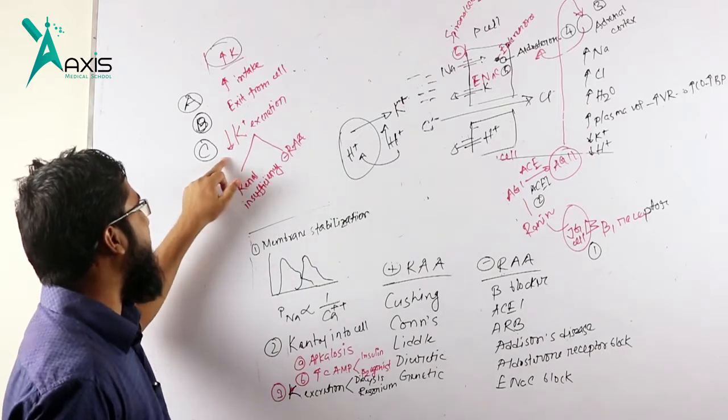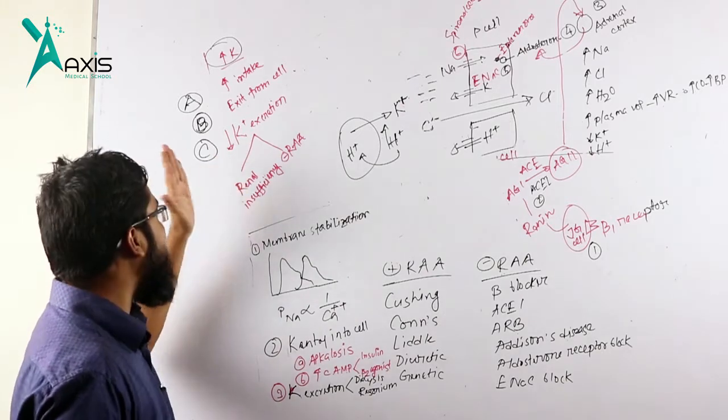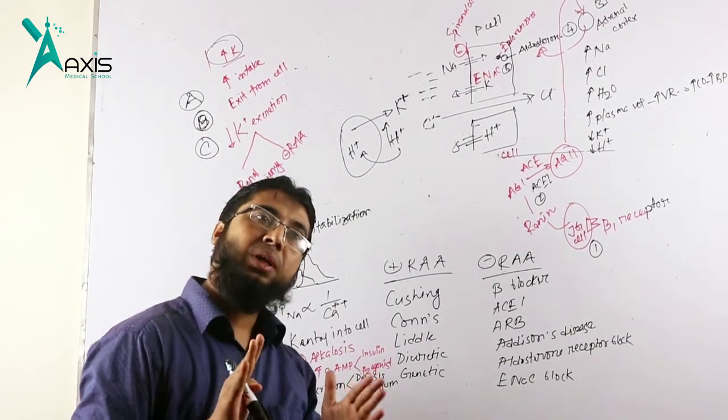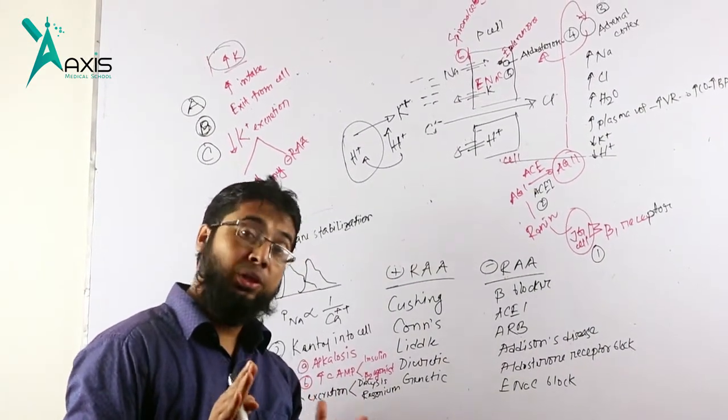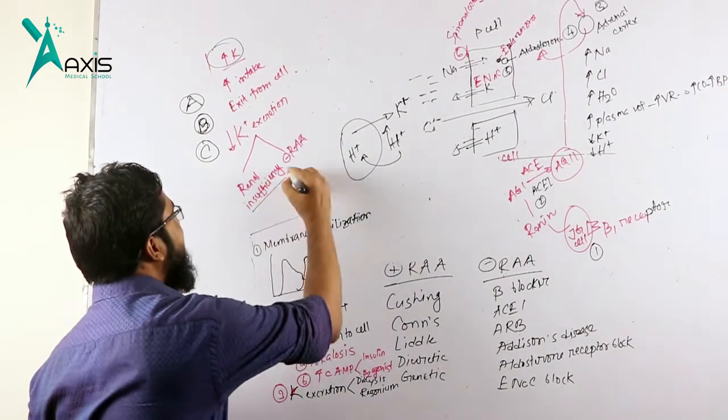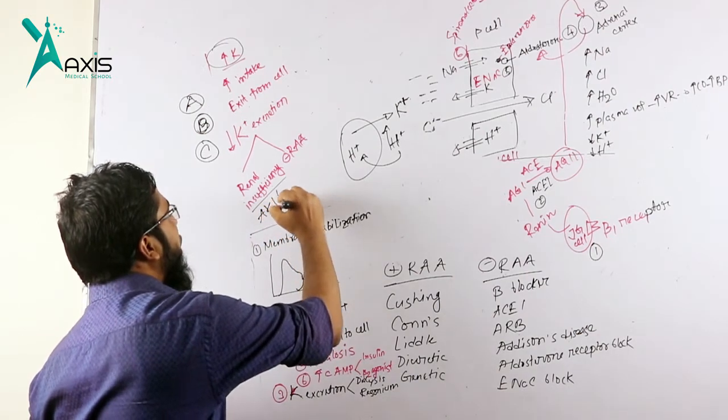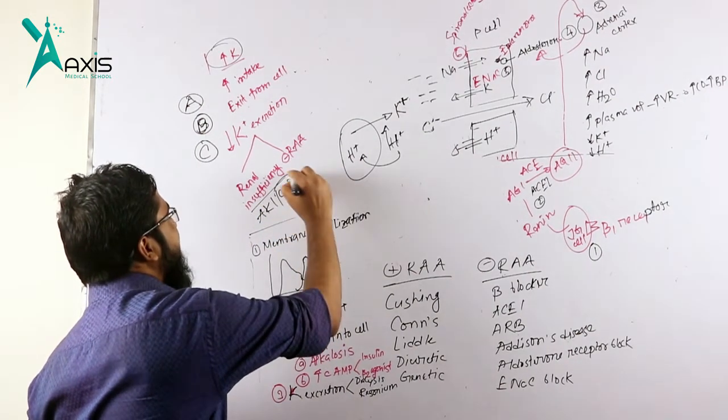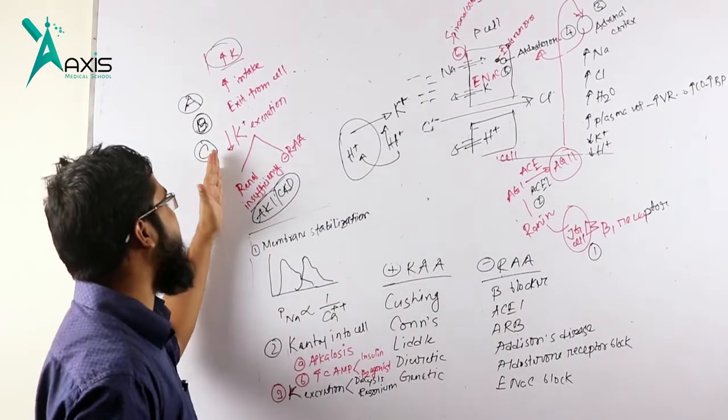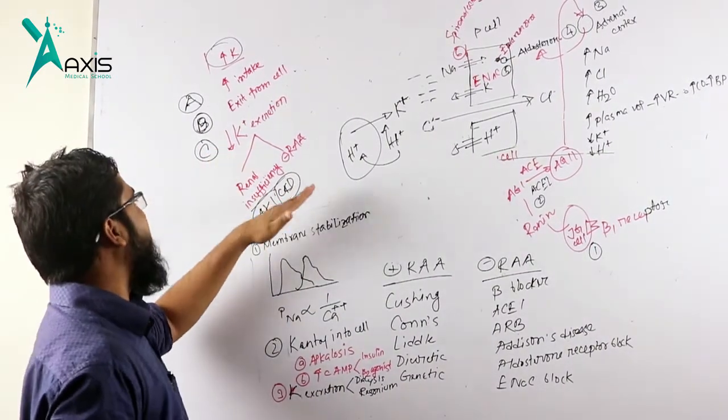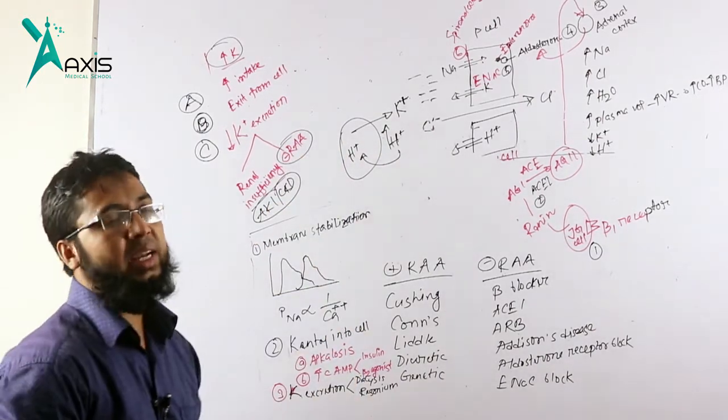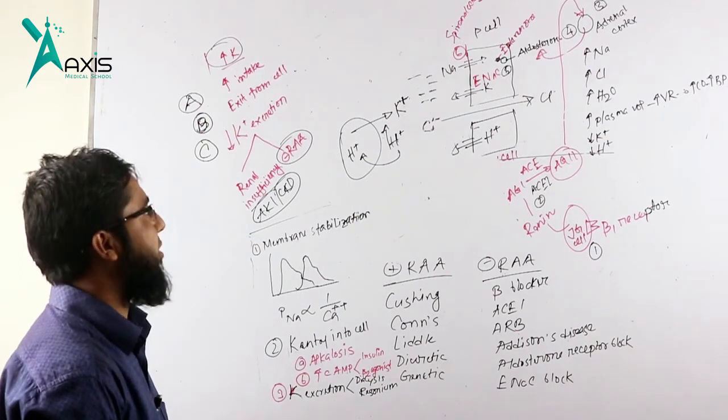The third cause is decreased potassium excretion. One of the major functions of the kidney is potassium homeostasis, so renal insufficiency in the form of AKI or CKD will cause under-excretion of potassium and increase potassium levels. Additionally, renin-angiotensin system blockage can also cause hyperkalemia.